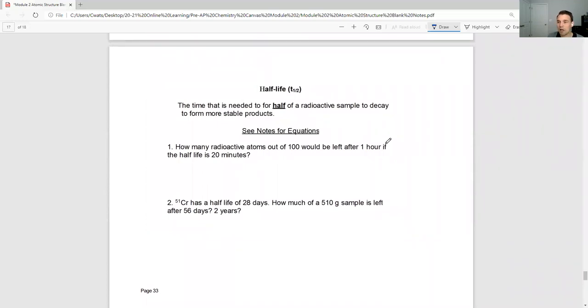We have to talk about half-life. Half-life is the time needed for half of a radioactive sample to decay to form a more stable compound. There are equations for this. I'm going to have those in the presentation page. But it's very easy. Half-life is the time for half of it to go away. So all you're doing is dividing by two.